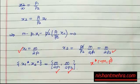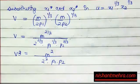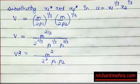So your Marshallian demands, which are functions of income and prices, are x1* = m/(2p1) and x2* = m/(2p2). Now you substitute these back into the direct utility function u = x1^(1/3) * x2^(1/3), giving [m/(2p1)]^(1/3) * [m/(2p2)]^(1/3), and after calculation you get the resulting expression.